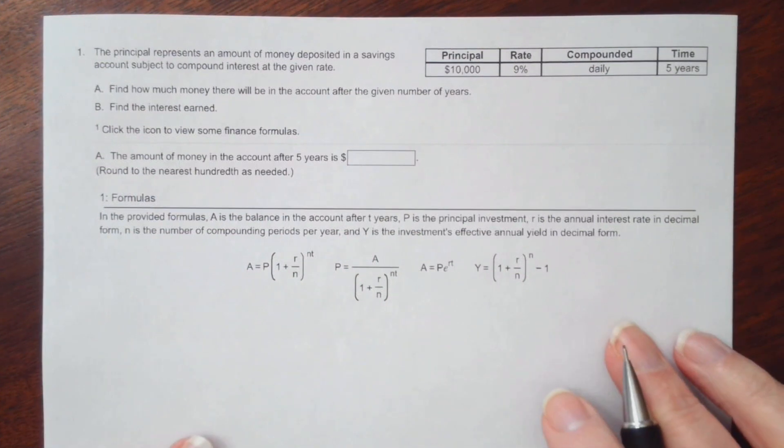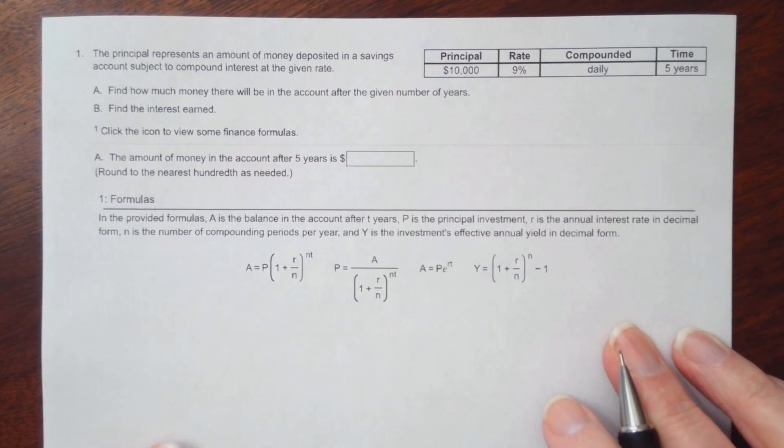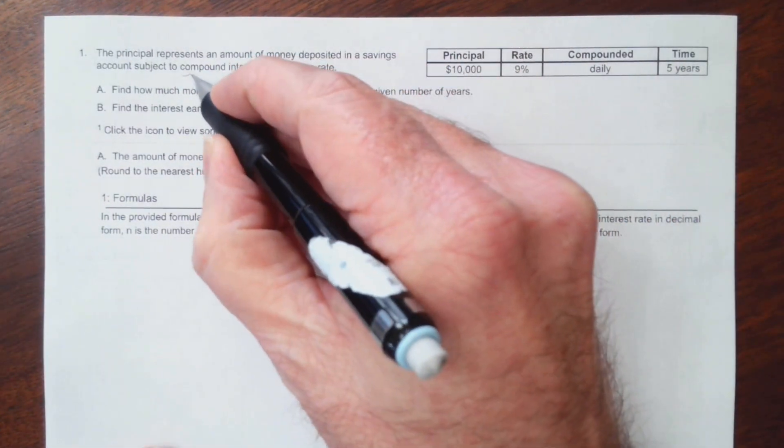Alright, let's go ahead and look at this problem. It says the principal represents an amount of money deposited in a savings account subject to compound interest at the given rate. So first of all, it is compound interest.